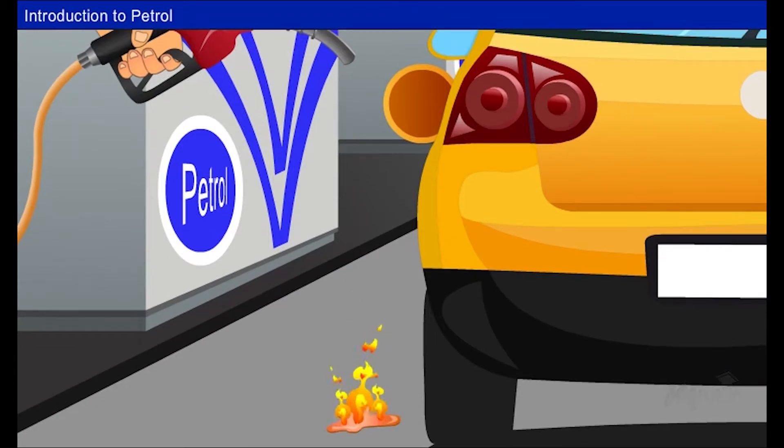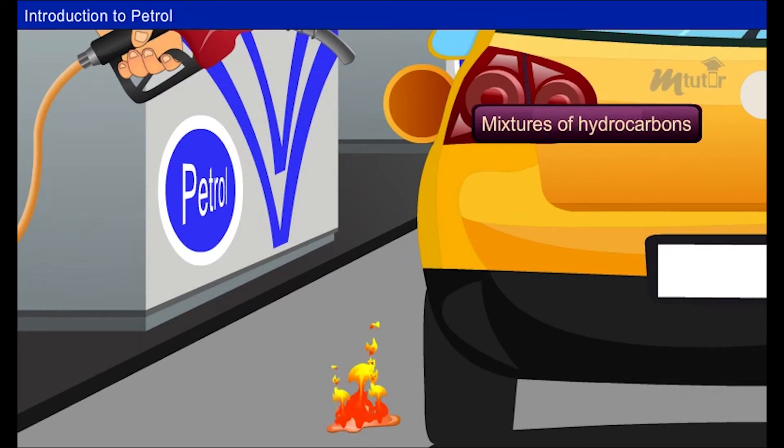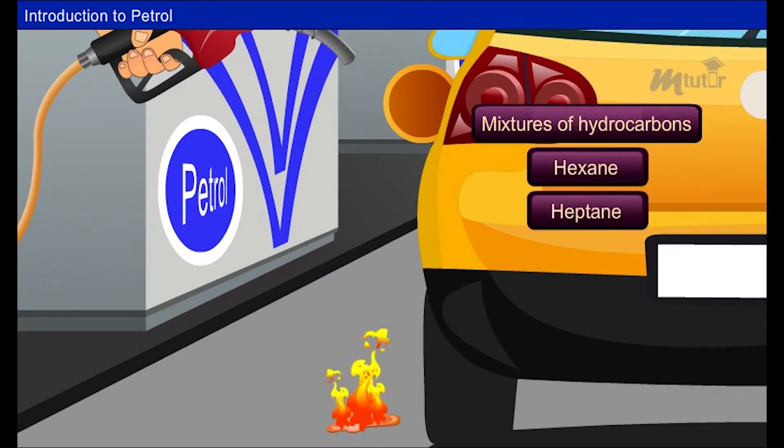Petrol is a volatile flammable liquid mixture of hydrocarbons. Mainly hexane, heptane and octane are obtained from petroleum.